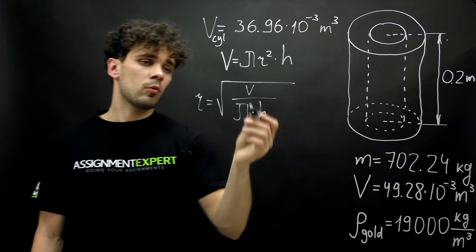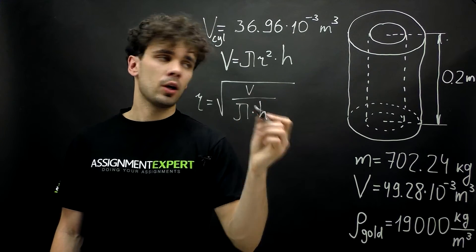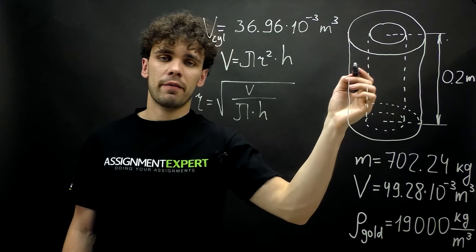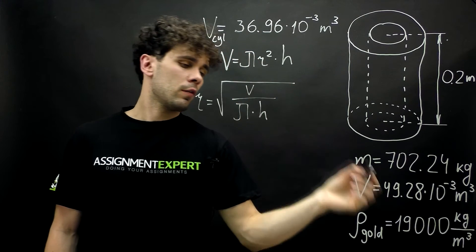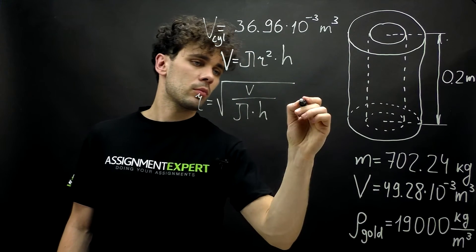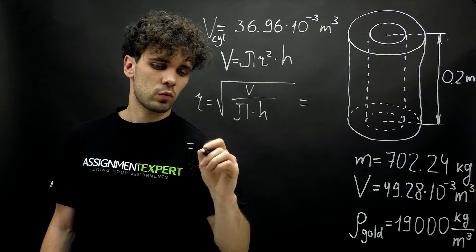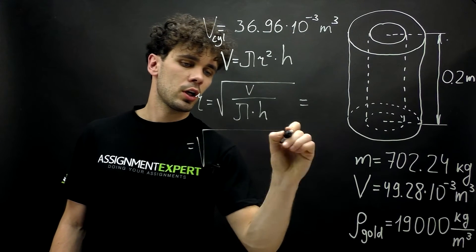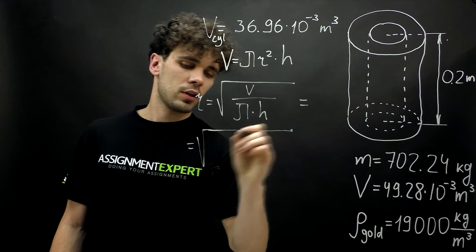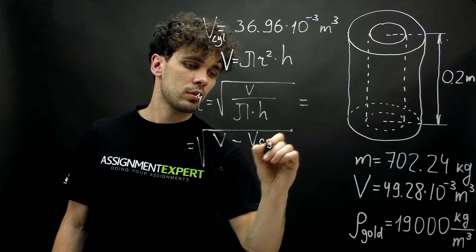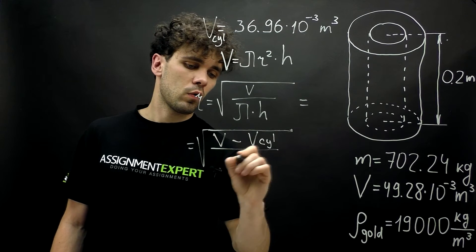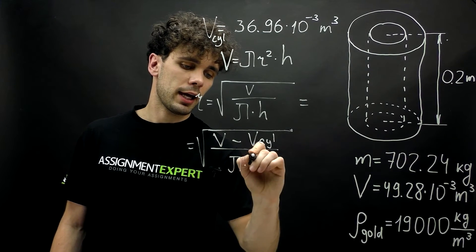And now, what is the v here? We need the volume of the inner cavity. So here, we will subtract the volume of the cylinder from the total volume. So this transforms to the square root of v minus v cylinder over pi h.